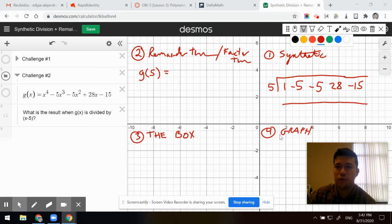Synthetic division invites me to do the following. Coefficient 1, negative 5, negative 5, 28, negative 15. Potential 0, 5.